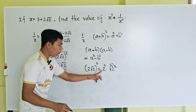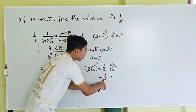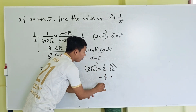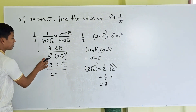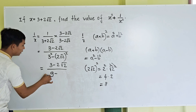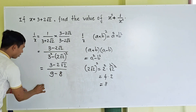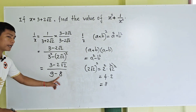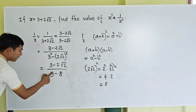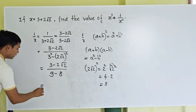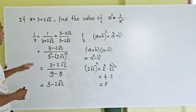We get 2 squared equals 4, so 4 times 2 equals 8. And 3 squared equals 9. So the denominator is 9 minus 8, which equals 1. Since the denominator is 1, we don't need to write it, so 1 divided by x equals 3 minus 2 square root 2.